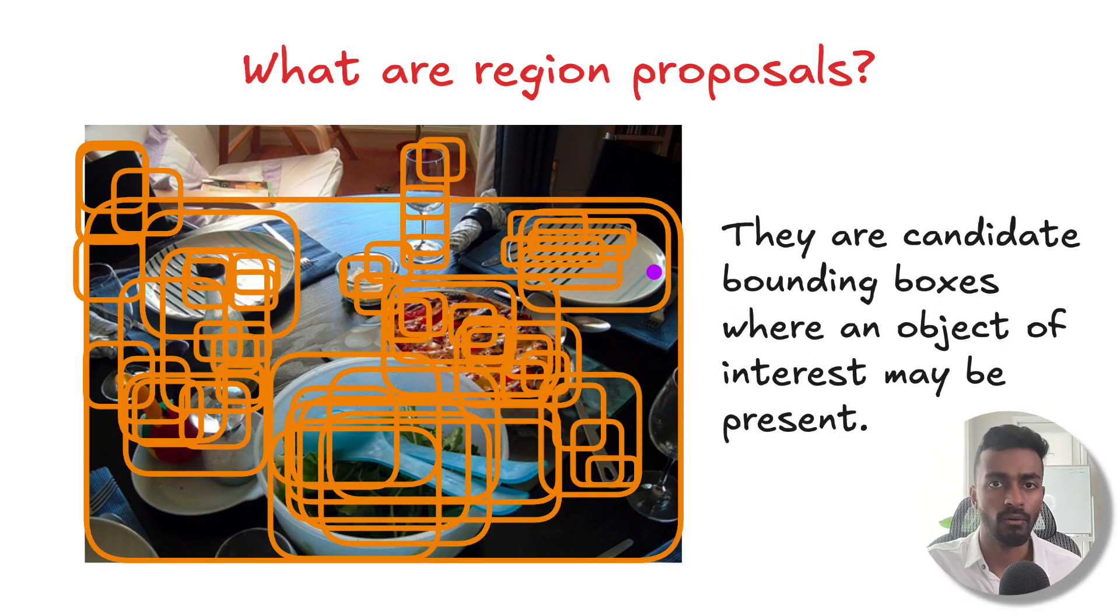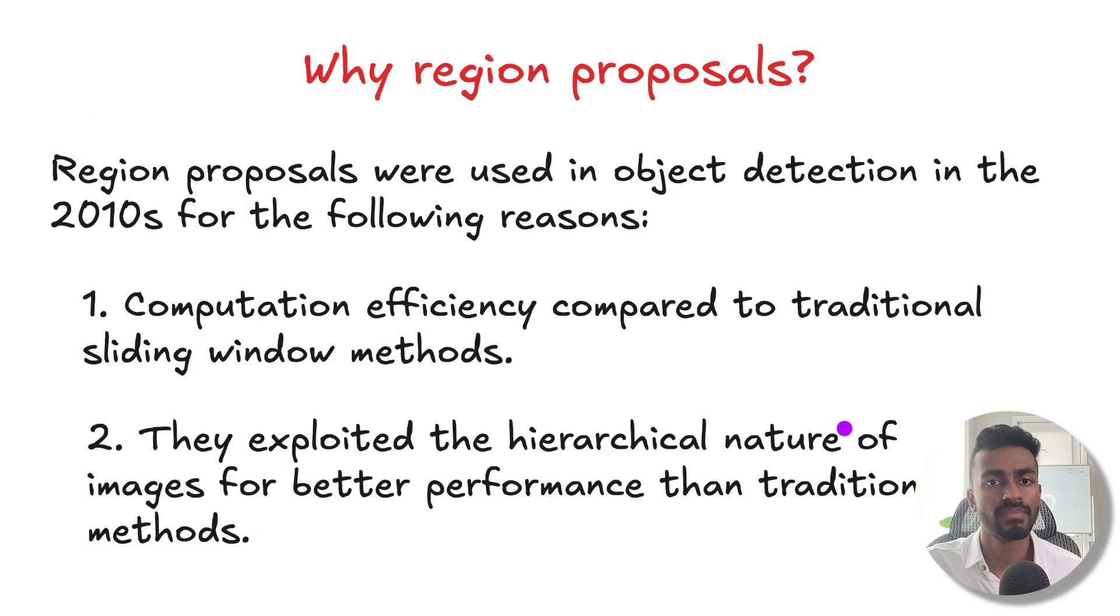So in this video, we looked at what are region proposals, and we defined them as candidate bounding boxes where an object of interest may be present. Then we discussed why we use region proposals, especially in the 2010s, and it's because of computation efficiency as well as improved performance, and specifically for the current algorithm that we took, we exploit the hierarchical nature of images.